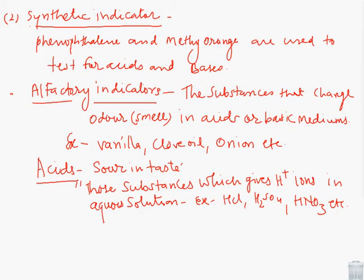The next, synthetic indicators. Synthetic means man-made, manufactured in industries. Examples: phenolphthalein, methyl orange that are used to test acids and bases. They also change their colors in acidic and basic solution.